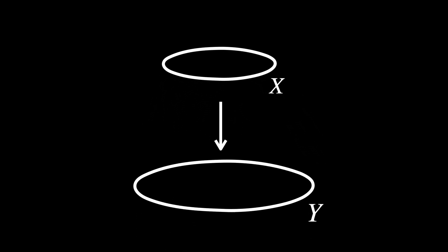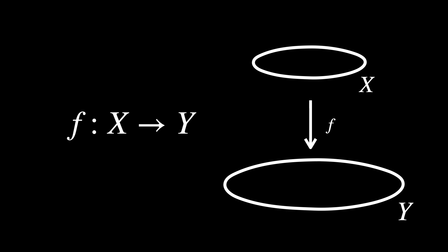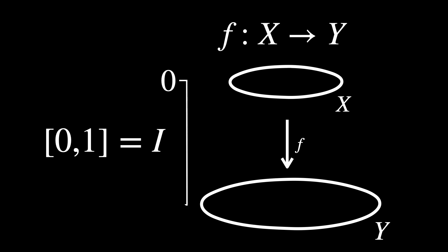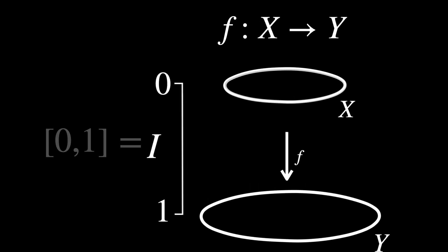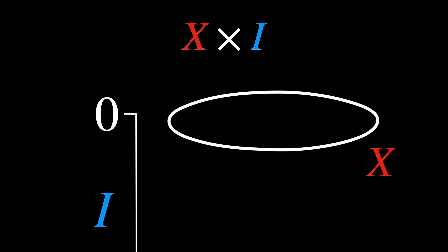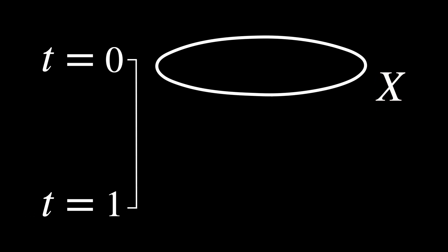Now that you have a good intuition of what this process looks like, let's describe it in a more general and abstract way. We have a topological space X, and our goal is to transform X into another space Y. This transformation is described by a family of functions f from X to Y, parameterized using the interval [0,1], denoted as I. The interval I and the space X are combined via the Cartesian product, consisting of all ordered pairs (x, t), where x is a point in X and t is a point in I. Each such pair represents a point x at a specific time t during the transformation.